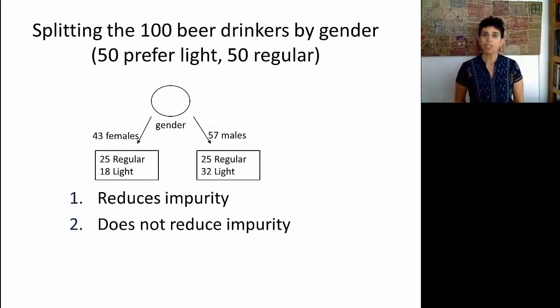Let's look at an example. Suppose we start with 100 beer drinkers where they're broken down 50-50 into regular beer drinkers and light beer drinkers. Now the question is, should we split these 100 people by gender? Does this actually improve our homogeneity? So we break down the 100 people, 57 are males and 43 are females, and here is the breakdown of their preferences. Stop the video for a minute and see if you can figure out whether we've reduced impurity by including this gender split or not.